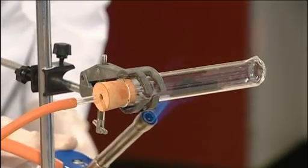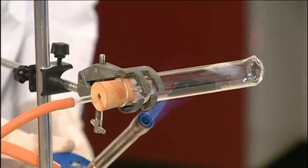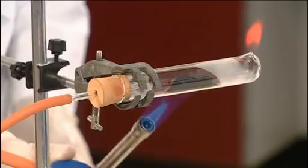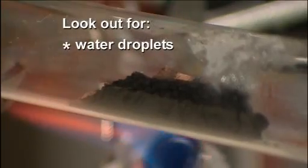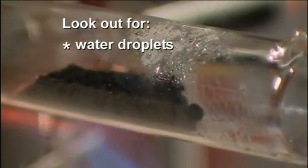At this point, a number of interesting observations can be made, and these will probably need to be pointed out to the audience. Droplets of water will condense on the cooler part of the reduction tube near the hole. These will evaporate as the tube gets hotter.